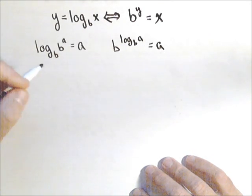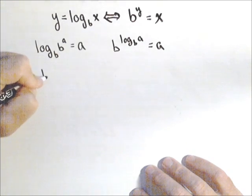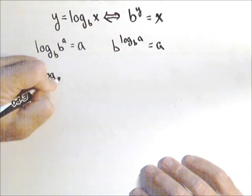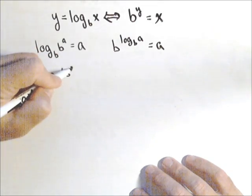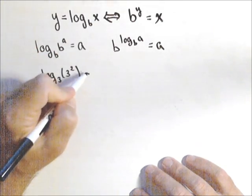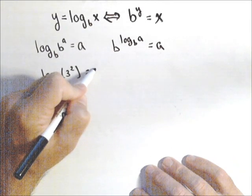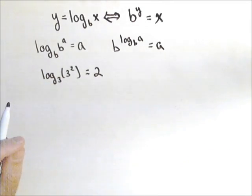So let's see how this property applies. So if we have log base three of three squared, these bases are the same. We're composing inverses, so it's just simply equal to two.